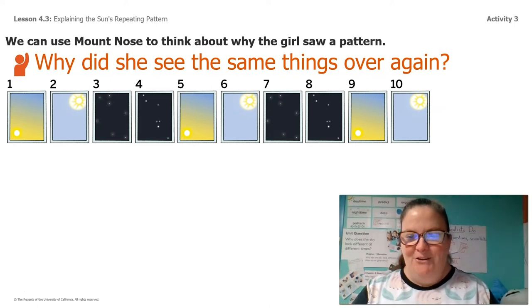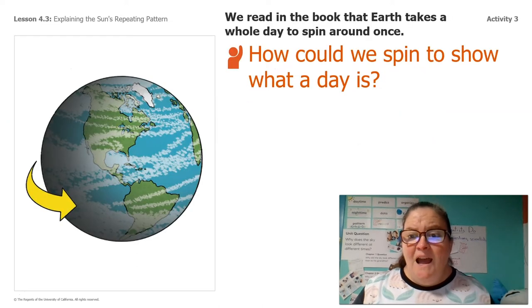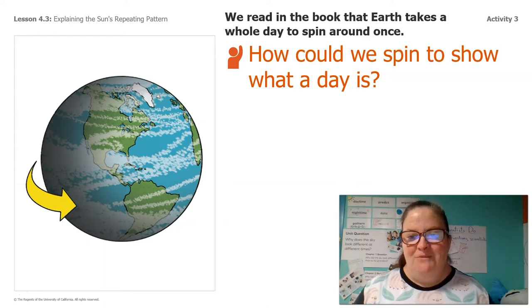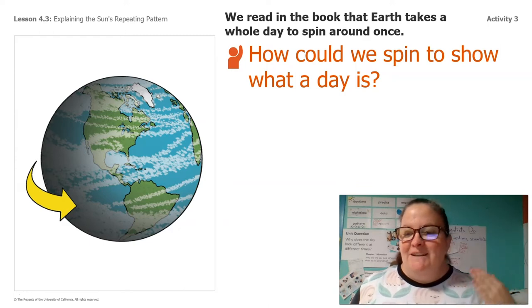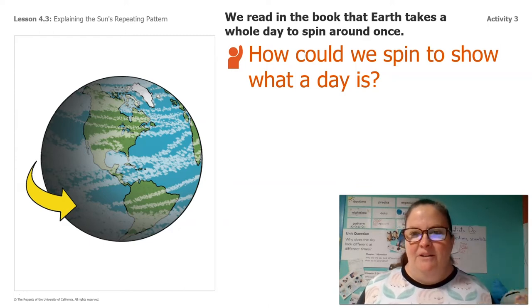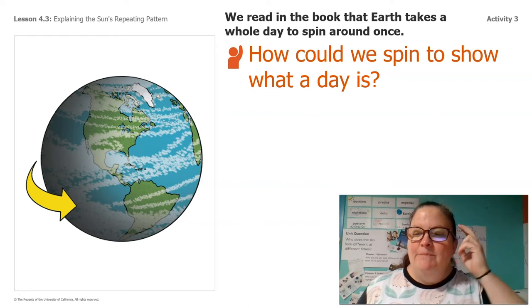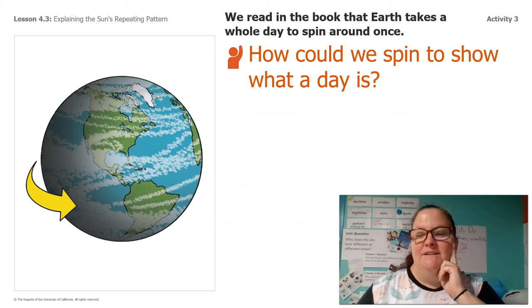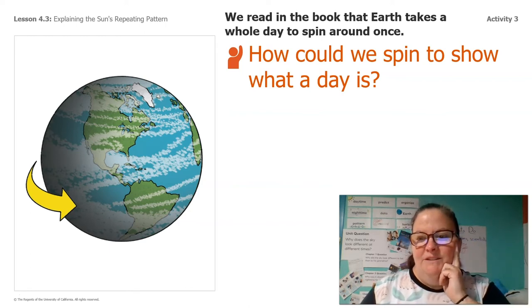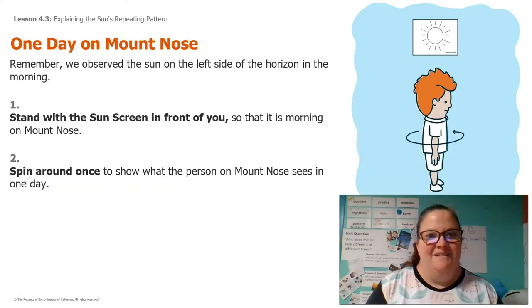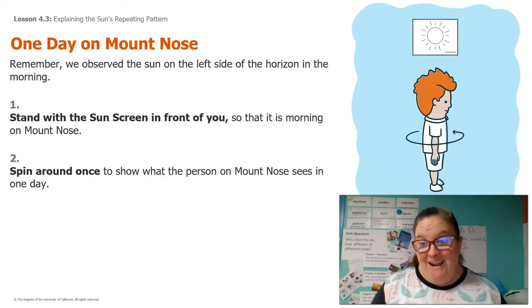We can use what we just did with Mount Nose to think about why the girl saw that pattern. What was happening with the earth that made her see the sun in that pattern over and over again? Tell me — what was happening to the earth? I heard you say it: the earth was spinning. So if the earth's spinning is why we see that pattern, how could we spin to show what just one day is? What would you guys need to do?